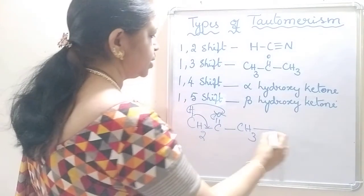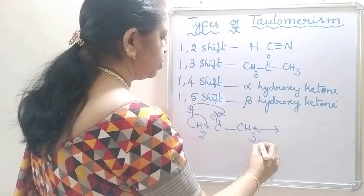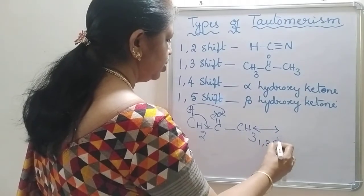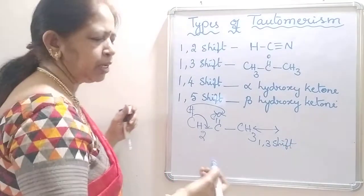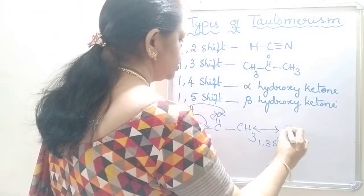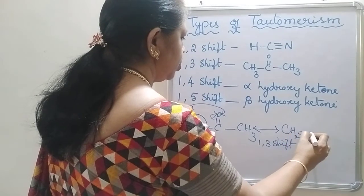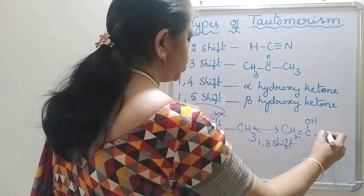So it is known as 1-3 shift. It is called 1-3 shift which is also known as keto-enol tautomerism CH2 double bond C-OH-CH3.